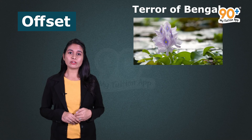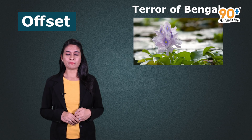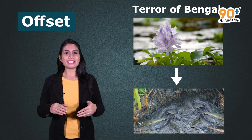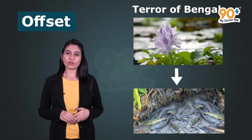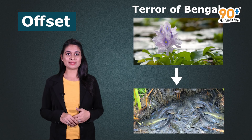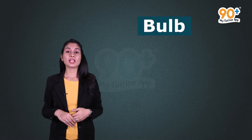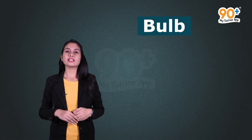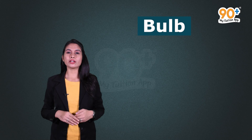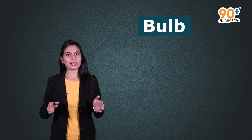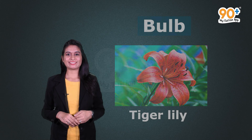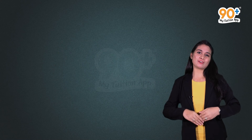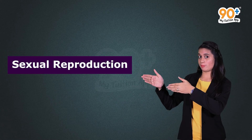An offset is a part of a branch or stem that reproduces asexually to form a new daughter plant — for example, water hyacinth, also called the 'terror of Bengal.' This plant grows only on stagnant water and clears out oxygen from the water, leading to the death of aquatic organisms. A bulb is another reproductive structure where the axillary bud grows on the parent plant stem — for example, tiger lily.